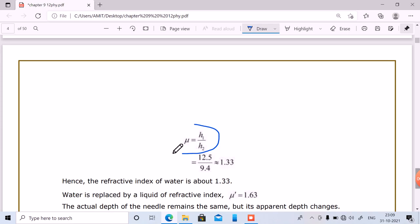The apparent depth in water is 9.4 centimeter. Using the refractive index formula, we can calculate the values.